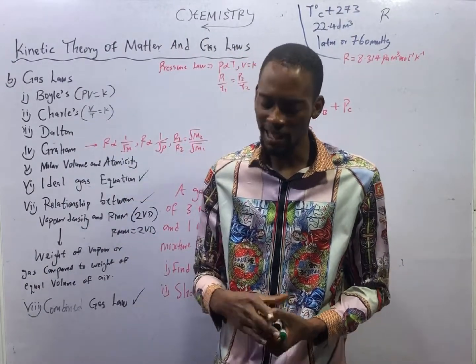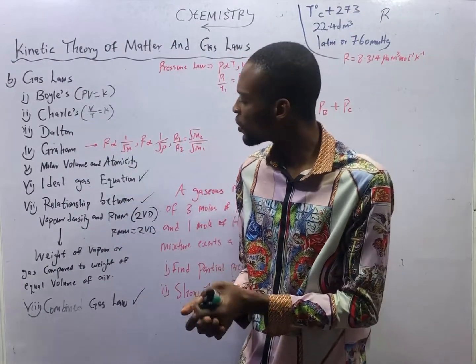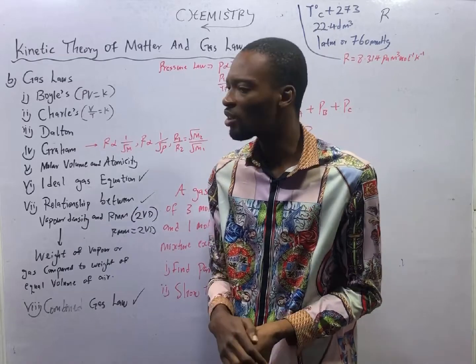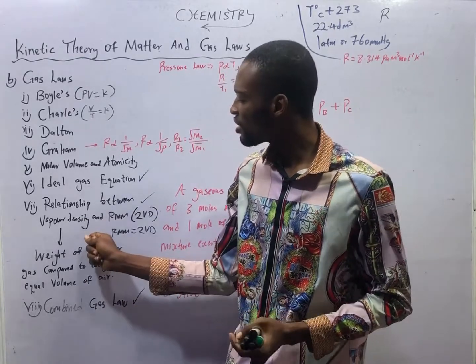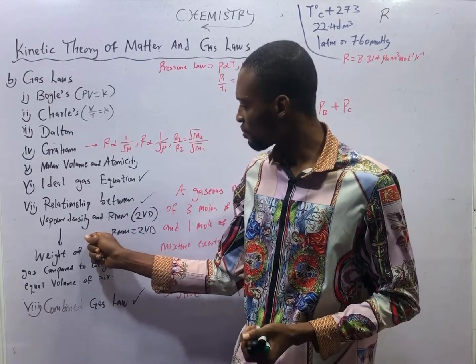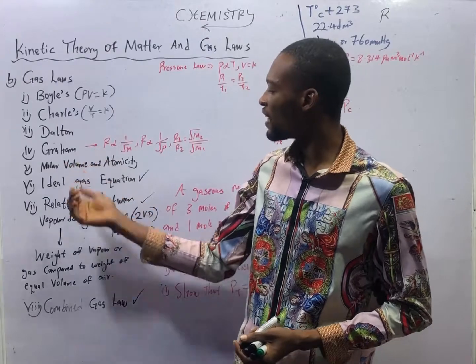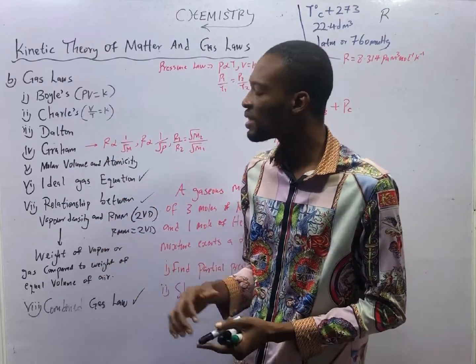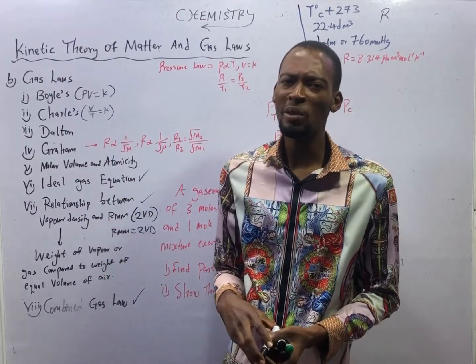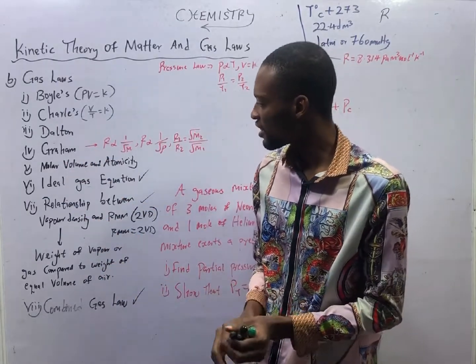This will help you in the future in chemistry, under empirical and molecular formula and other topics. So take note of this relationship. Graham's Law of Diffusion is what tells us the relationship between relative molecular mass and vapor density.